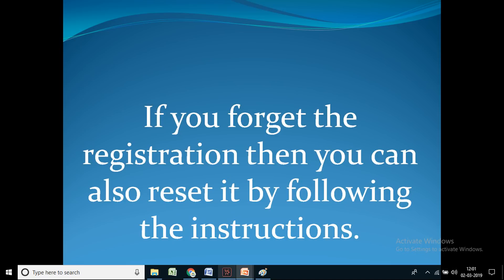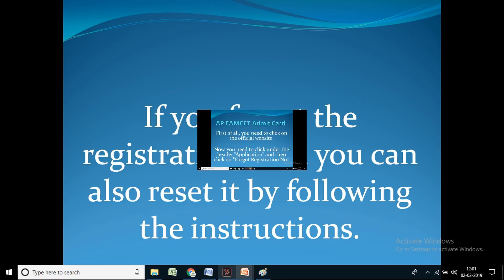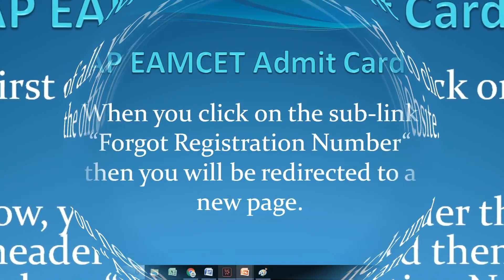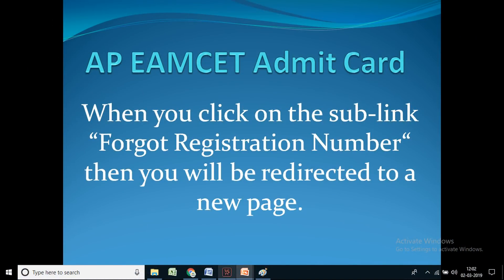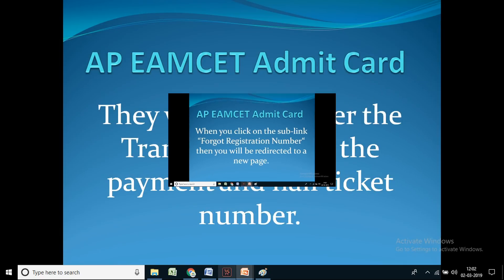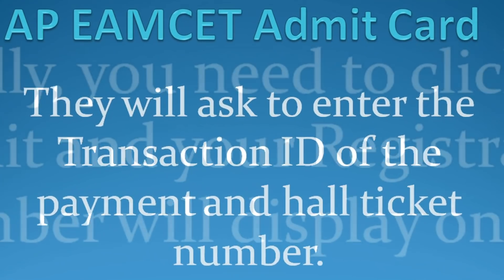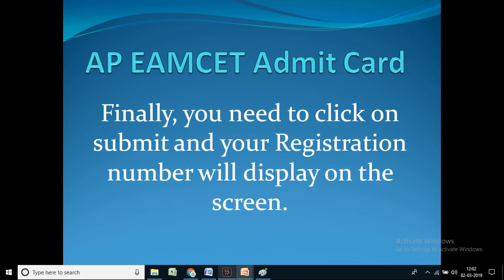If you forget your registration number, you can reset it by following these instructions. Visit the official website, click under the header 'Application,' and then click on 'Forget Registration Number.' You will be redirected to a new page where you need to enter the transaction ID of the payment and hall ticket number. Finally, click on submit and your registration number will display on the screen.